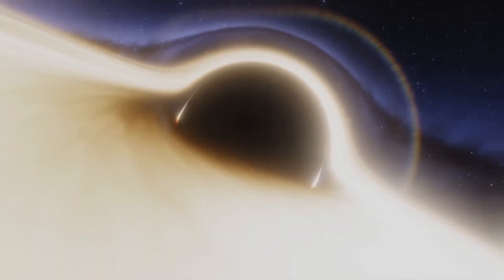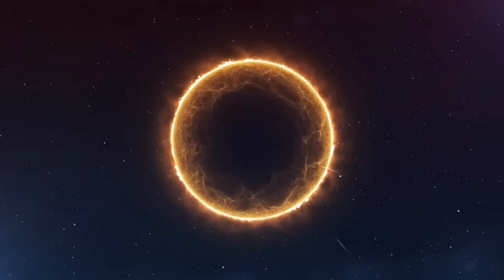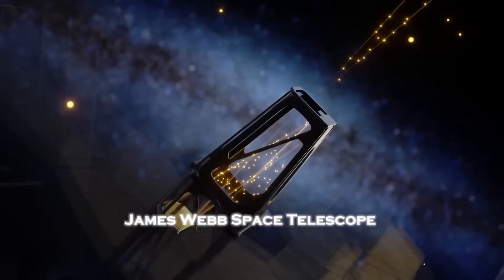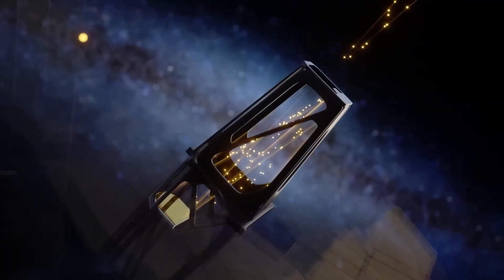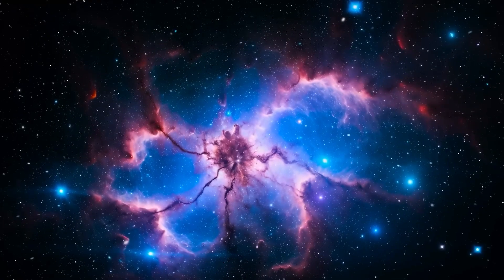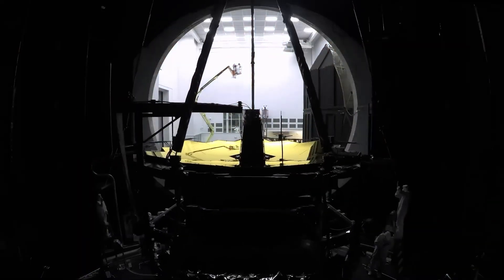But an echo of what? There are only two possibilities. Either the light circled back around the curvature of the universe, which would imply that space is finite and closed, or it hit something else. Something at the very edge, something capable of reflecting light. Something that shouldn't be there.